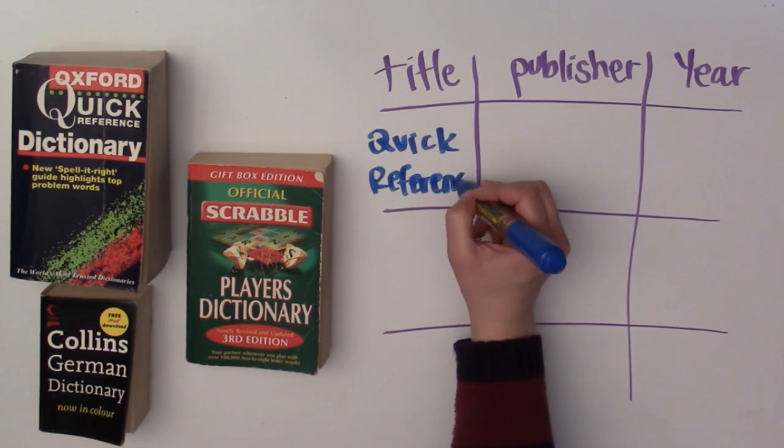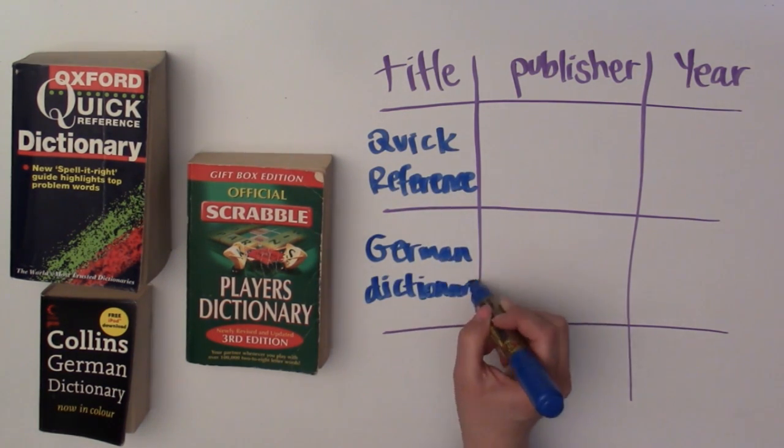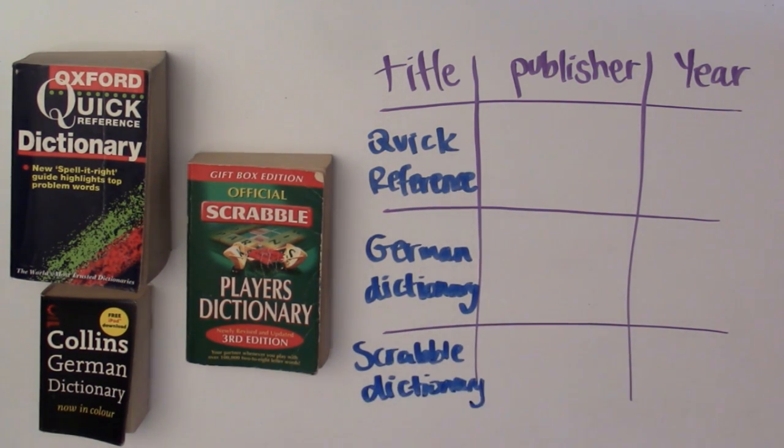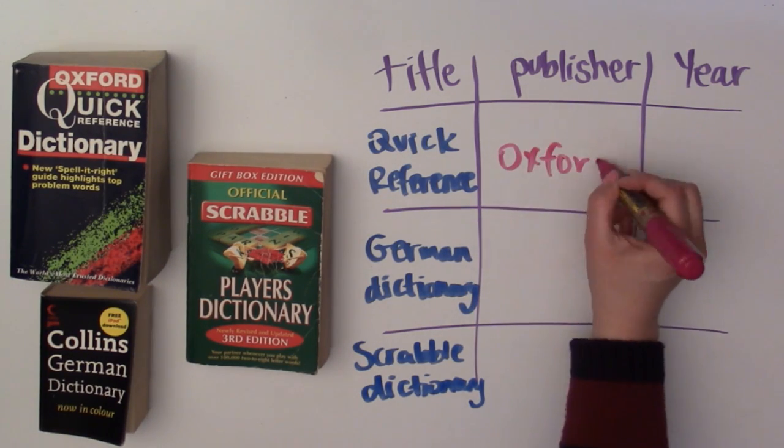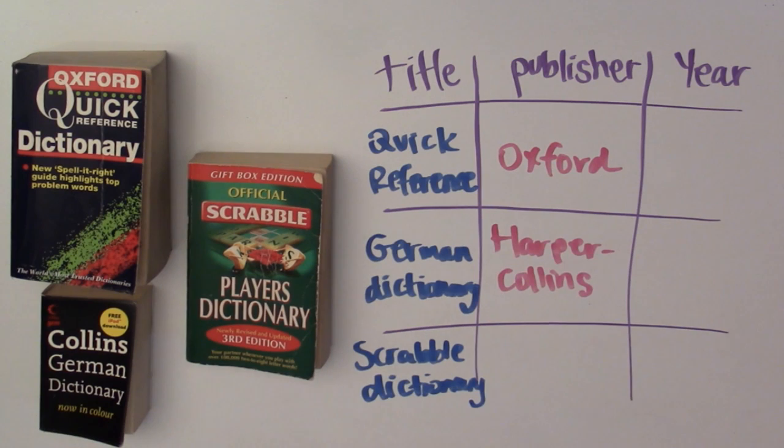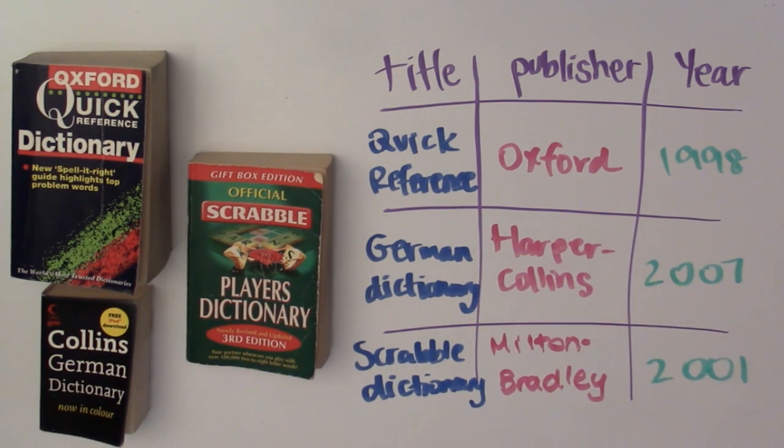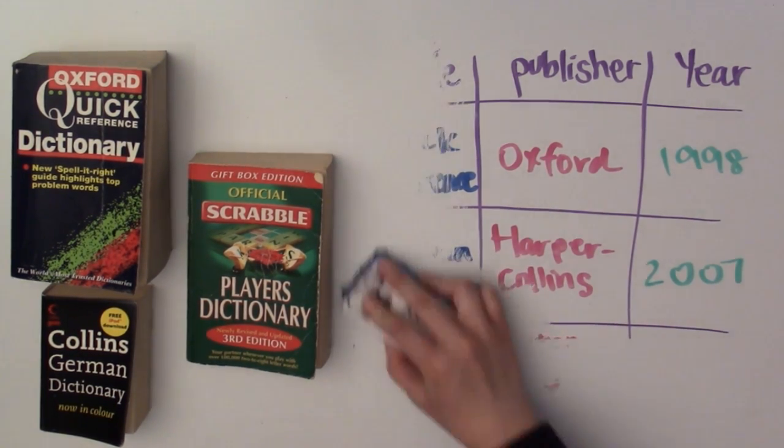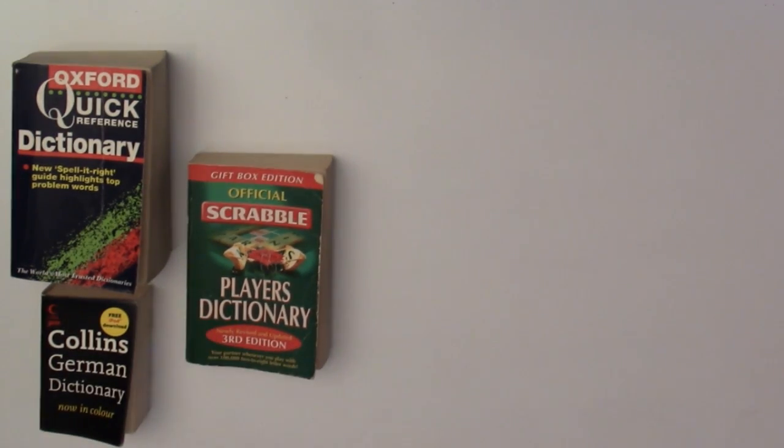Let's have a look at what this looks like in practice. Here we have some information about these three books that I have. We're going to record down the title, the publisher, and the year that the book was published. Because I'm only collecting data for a handful of books right now, there's a lot of space for me to record this information. Everything can be written out fully and it's easy to understand because it's not that much information that had to be recorded.